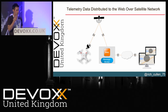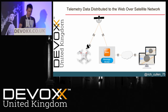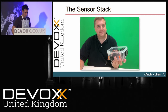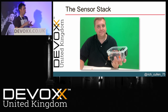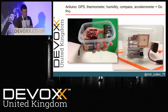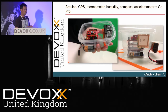We bought a DJI Phantom 2. One of my colleagues in the US basically built a sensor stack that we thought was light enough for the quadcopter to handle. Inside there's an Arduino, a GoPro camera, and things like a humidity sensor, thermometer, compass, etc.